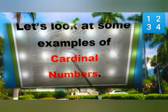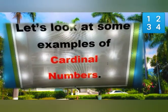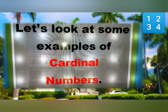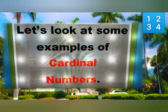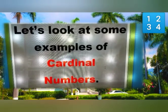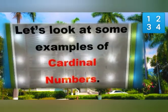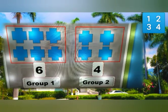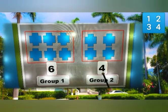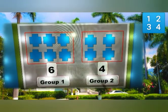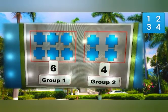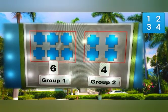Now we are going to look at cardinal numbers. Cardinal numbers are those numbers which are used to tell how many things are in a group. Let's look at these examples. Group one has six and eight. Group two has four and eight. The numbers four and six are cardinal numbers.